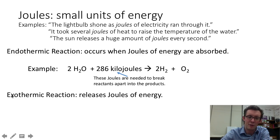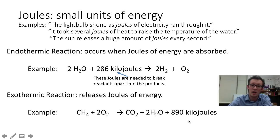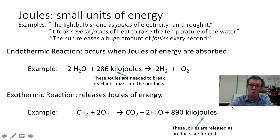And if a chemist wants to show that an exothermic reaction occurred, they will simply write the number of kilojoules released during the reaction. In this case you can see that the combustion of this methane molecule released 890 kilojoules of energy.